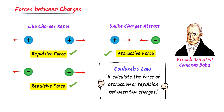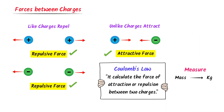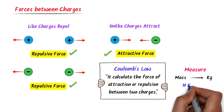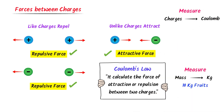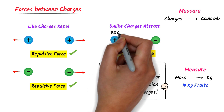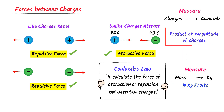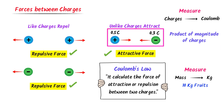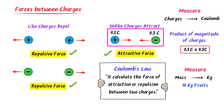Let me teach you one important term which is difficult for some students. We measure mass in kg — for example, 10 kg of fruits. Similarly, we measure charge in coulombs. For example, let the magnitude of this charge be 0.5 coulomb and the magnitude of this charge be 0.3 coulomb. If I say 'product of magnitude of charge,' it means we multiply the magnitudes of the two charges: 0.5 × 0.3.